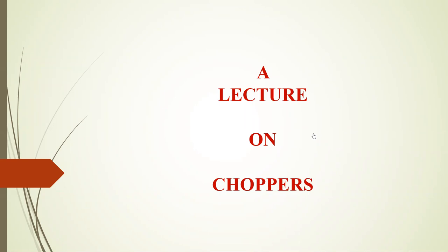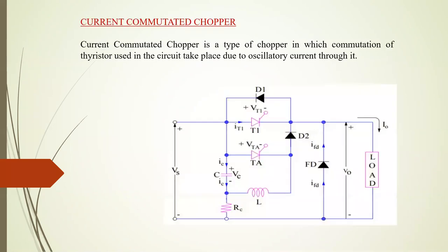In this lecture, we are going to learn about current commutated chopper. It is a type of chopper in which commutation of the thyristor used in the circuit takes place due to the oscillatory current through it.